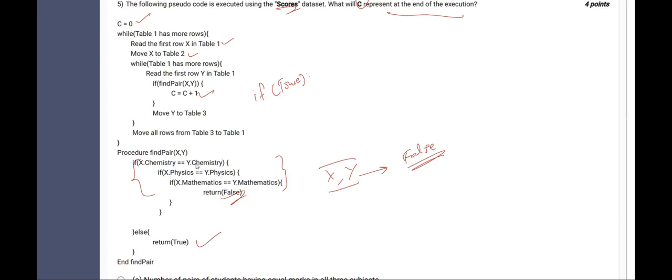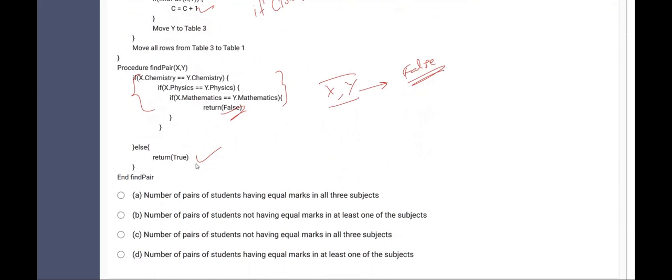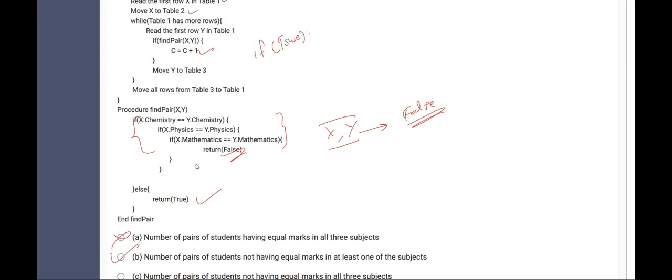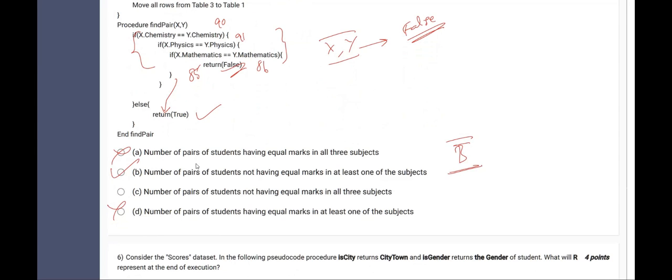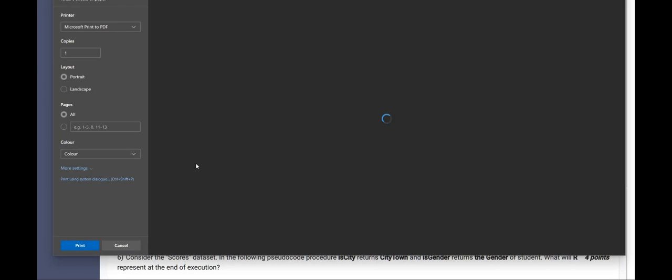For this it should be if true. Only then count gets incremented that is C gets incremented. When do we get a true? We get a true when the count of C is false. What does C capture? It will not capture this. This will give you false, having equal marks in at least one subject. No, this is also false. Now we are left over with B and C number of pairs of students not having equal marks in at least one of subjects. Option B is the correct answer because let us say if they have the same marks in mathematics and physics and chemistry. Let us say it is 90 in chemistry 91 physics whereas, in mathematics he scored 85 and she scored 86. Then it is not going to false. It is coming to true. So B is the correct answer here.